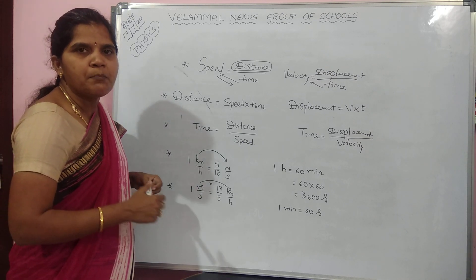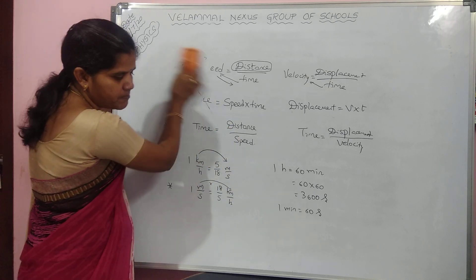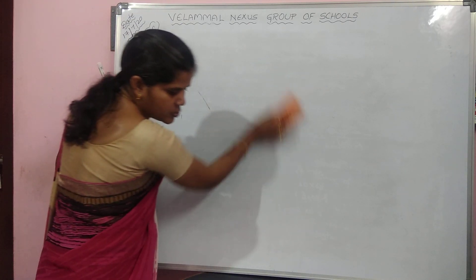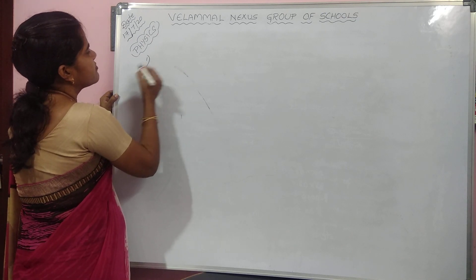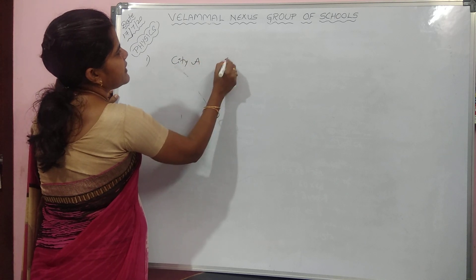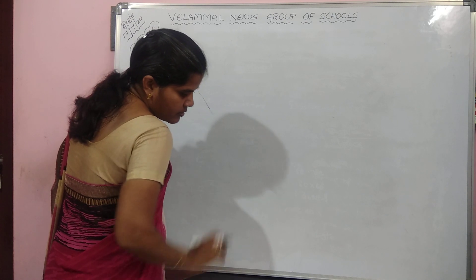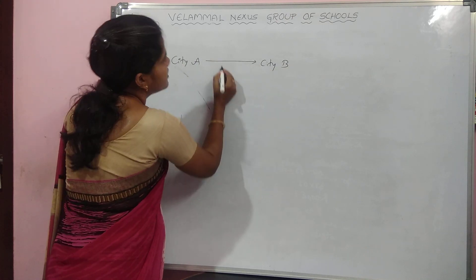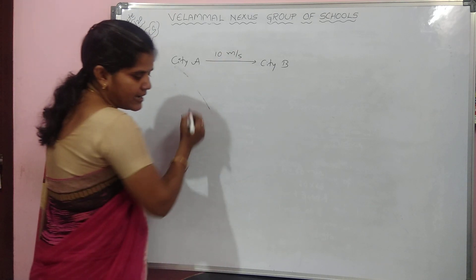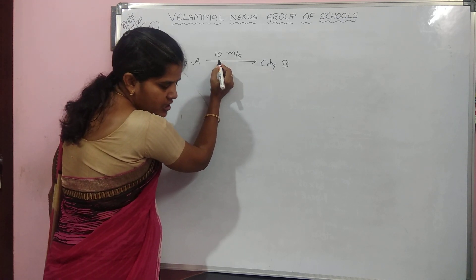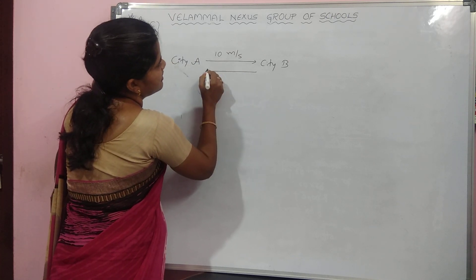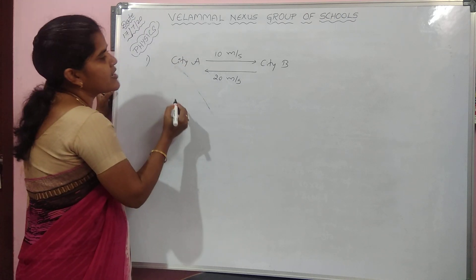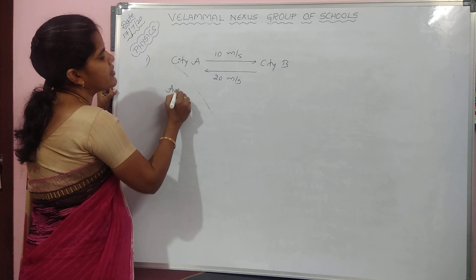Shall we start the numericals? Take out your book and start writing. A train travels from city A to city B with a constant speed of 10 m per second, and returns back with a constant speed of 20 m per second. Then find its average speed for the whole journey.